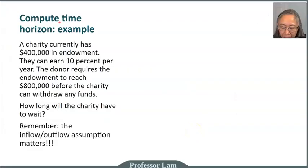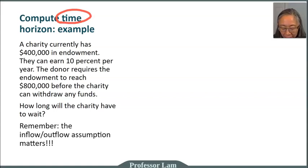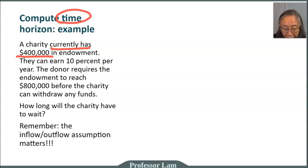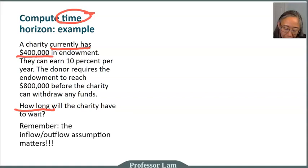In addition to computing the implied rate of return, we can also compute the time horizon. In the first example we'll work with just two cash flows — a present value and a future value. A charity currently has $400,000 in endowment and can earn 10% per year. However, the donor requires the endowment to grow to $800,000 before the charity can spend any money. The question is: how long do they have to wait?